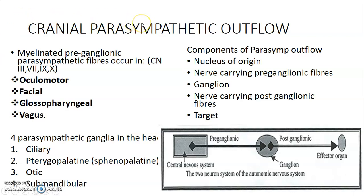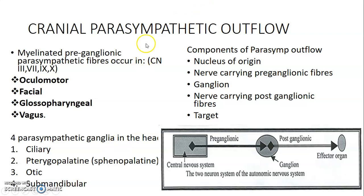What is the cranial parasympathetic outflow like? Parasympathetic is craniosacral, involving cranial nerves 3, 7, 9, and 10. There are four parasympathetic ganglia involved: the ciliary ganglion within the eye, the pterygopalatine (or sphenopalatine) ganglion, the otic ganglion, and the submandibular ganglion. These are the ganglia that those four cranial nerves use.